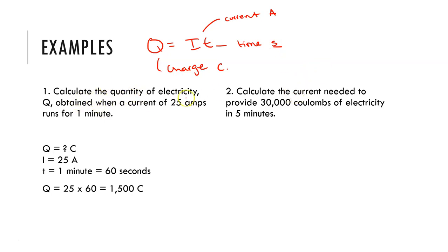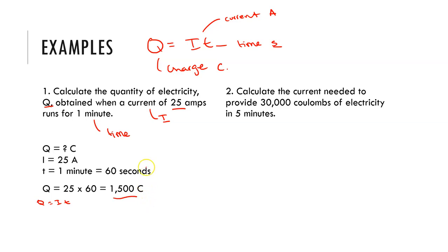In the first example we're told to calculate the quantity of electricity, the charge Q, obtained when a current I of 25 amps runs for one minute. Remembering that our time must be in seconds, so T is 60 seconds. Substituting into Q equals I times T: 25 times 60 gives 1500 coulombs — the amount of electricity passed through this cell.